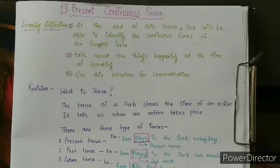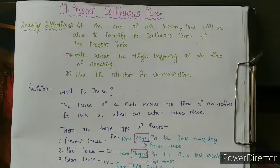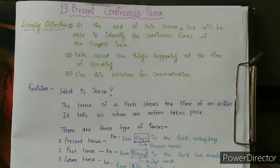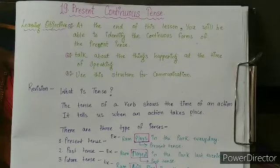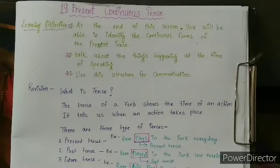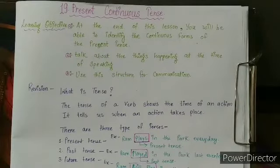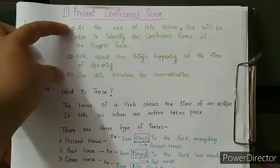Here we go with the learning objective. The learning objective of the topic Present Continuous Tense is: at the end of this lesson, you will be able to identify the continuous form of the Present Tense. You will also be able to talk about the things happening at the time of speaking.